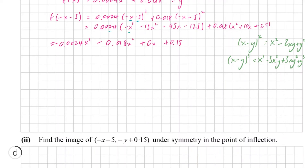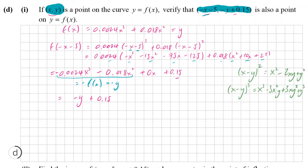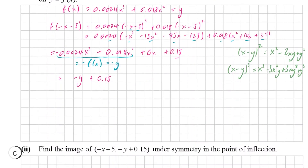Going back to the problem: once you multiply everything in from here all the way across, things start to cancel and you get this nice cubic with no standalone x coefficient. The trick is to spot that the first two terms are actually equal to minus f(x), which equals minus y. So you can just let the whole thing equal minus y plus 0.15. That's actually it — we've shown what we were asked to show: when you plug in (-x - 5) for x and cancel everything properly, the answer is minus y plus 0.15.